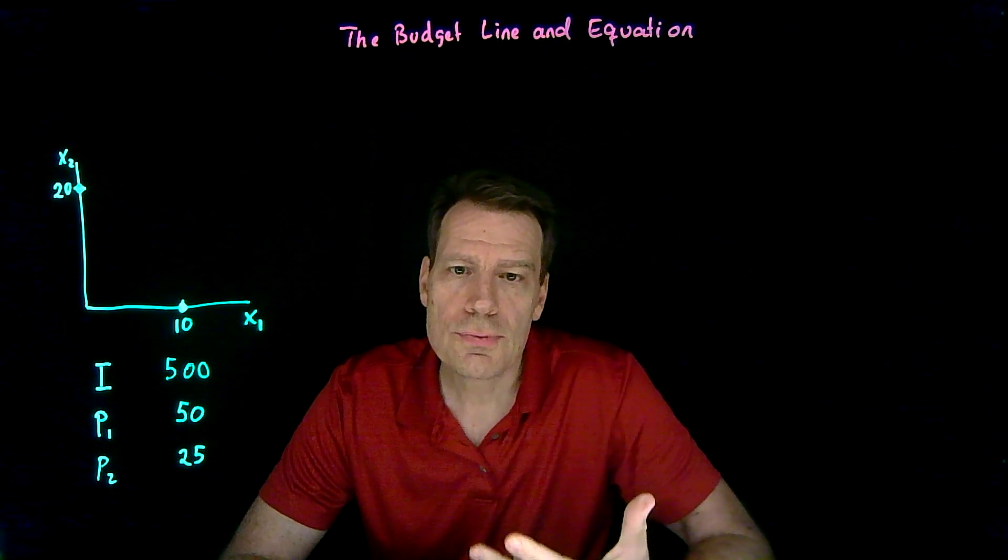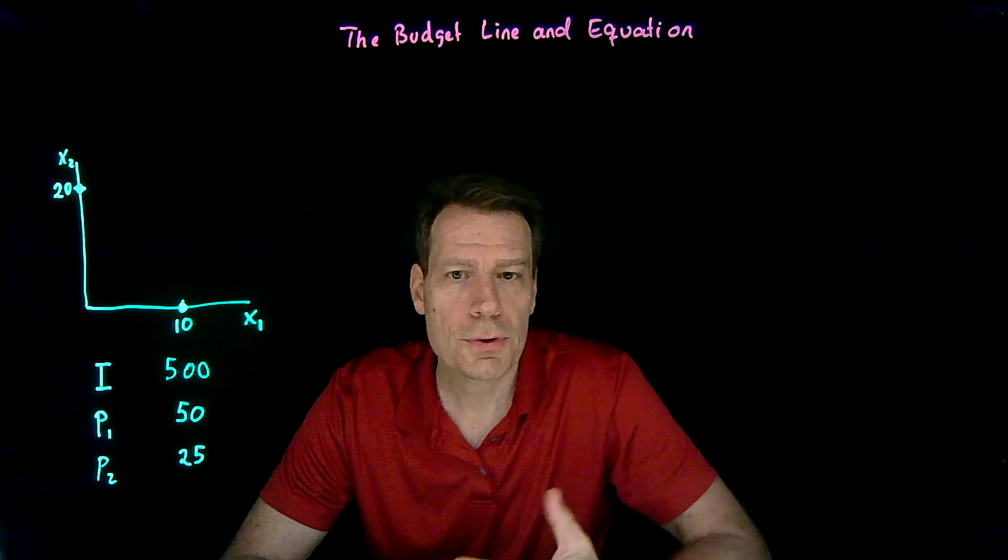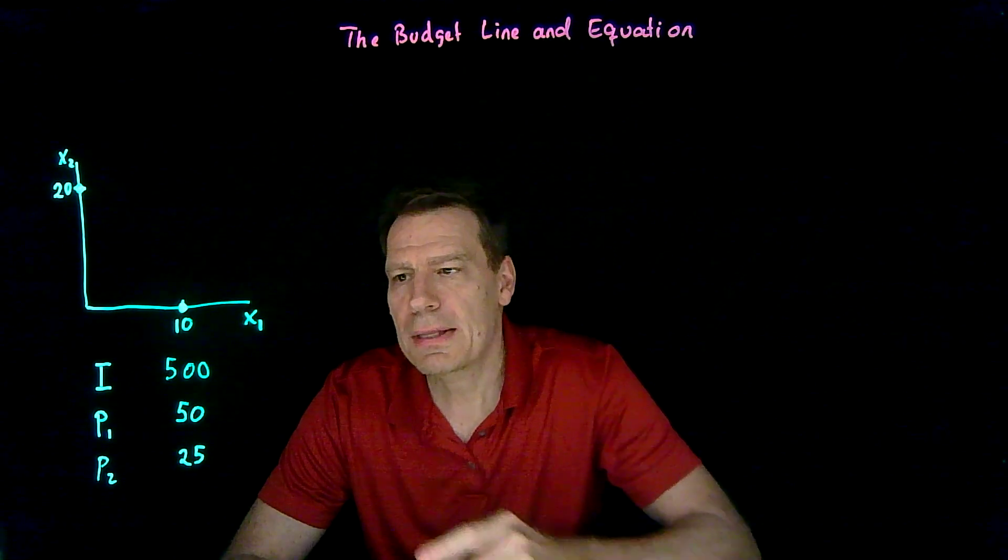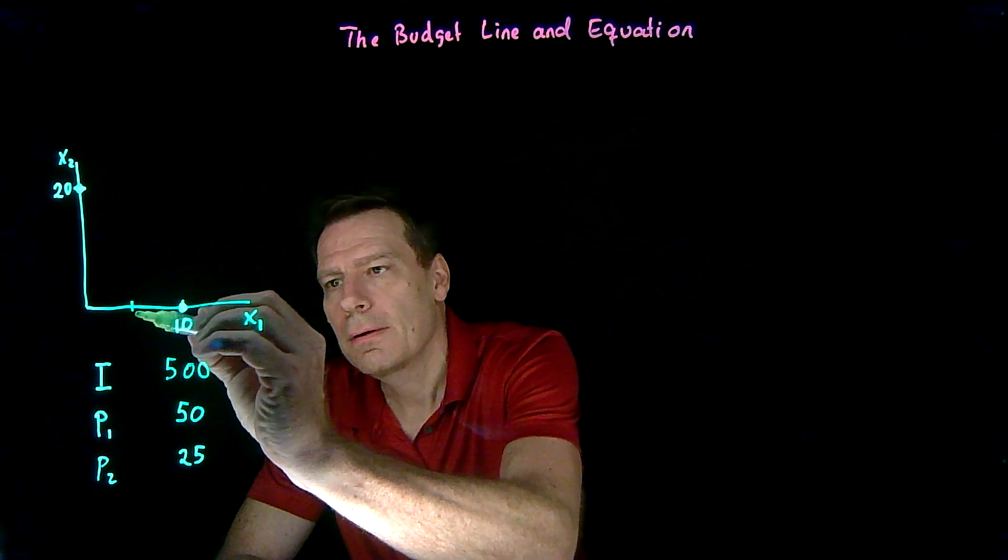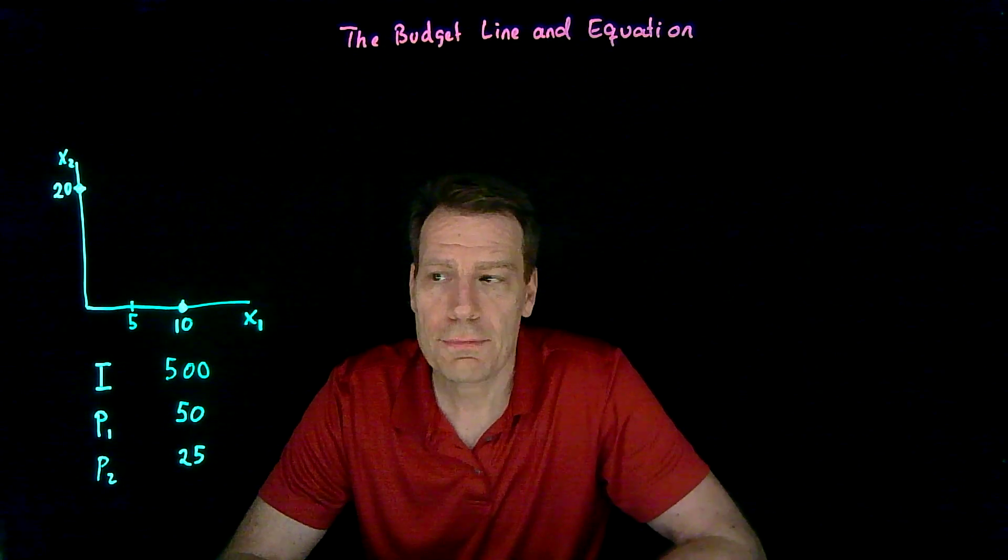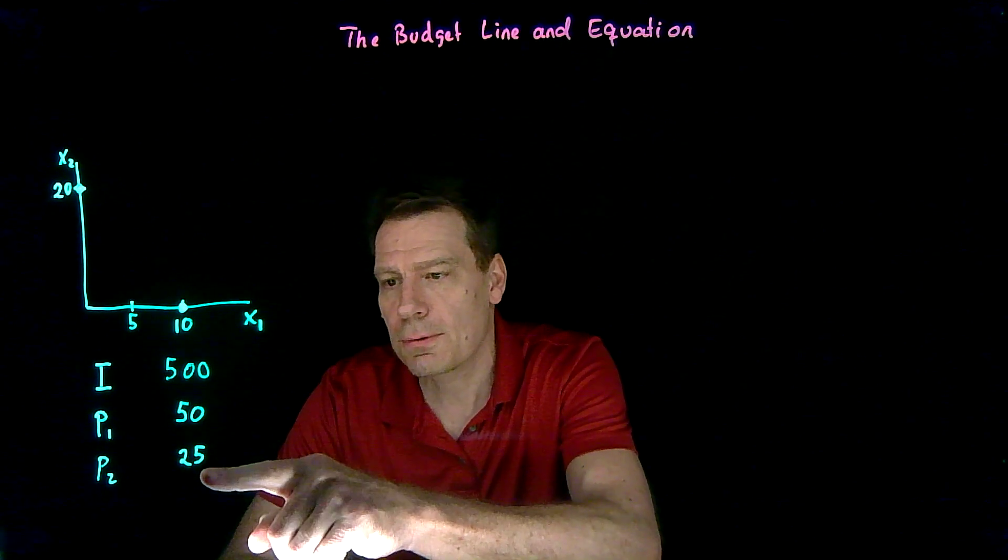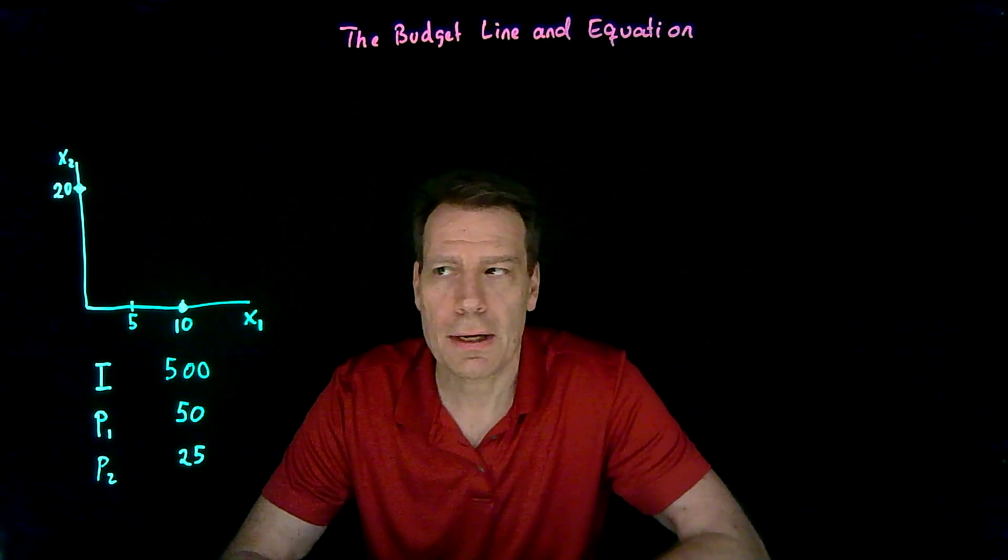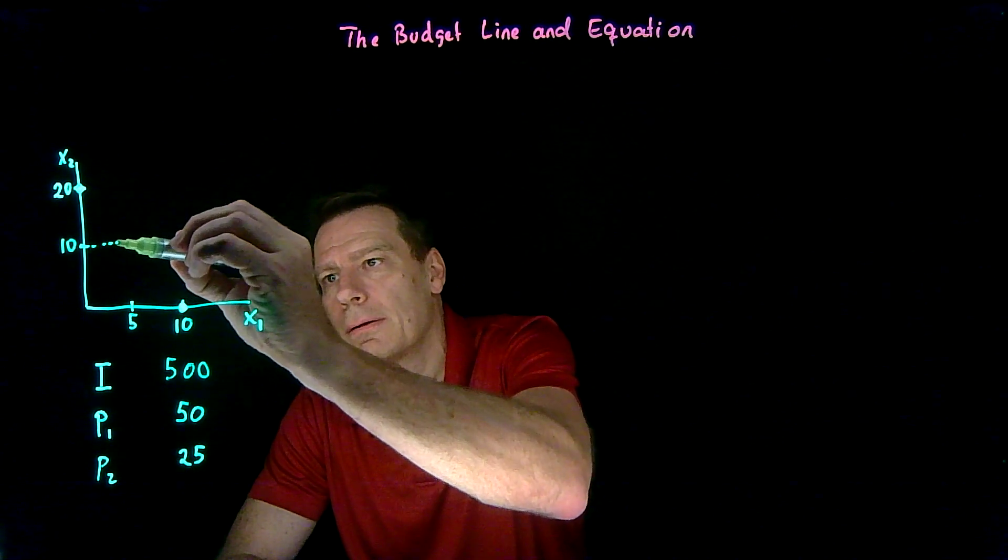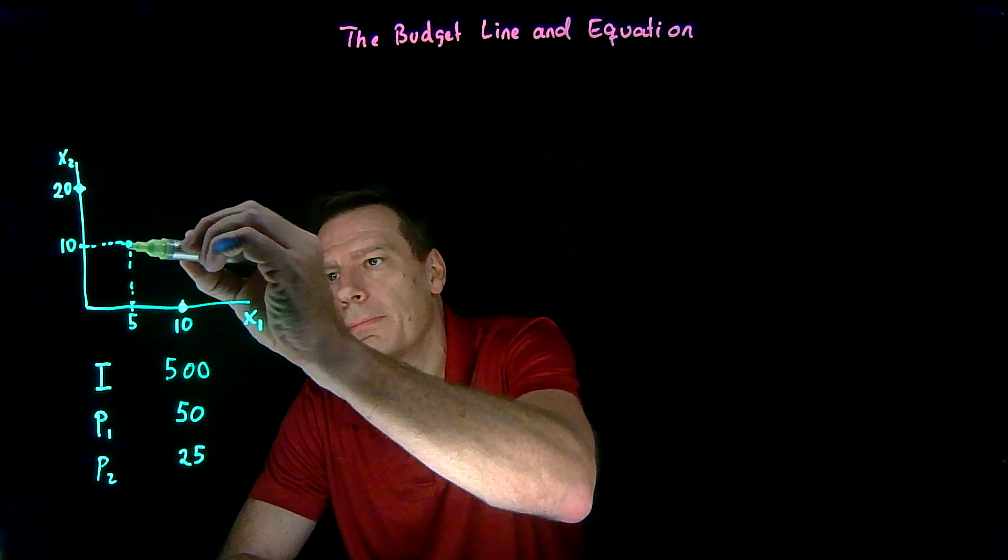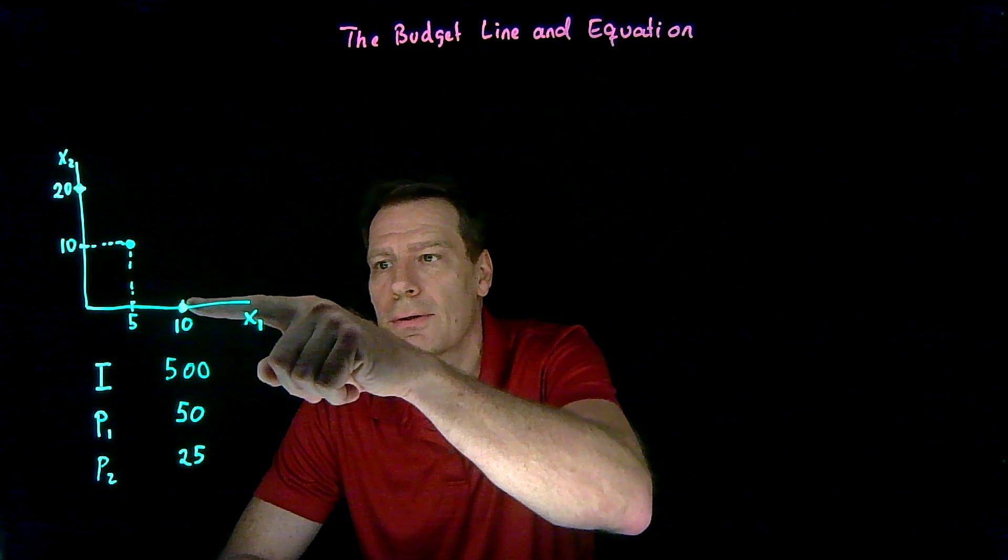So those are two extreme bundles you could buy, where you buy only one of the two goods. But of course, you could do many in-between things. You could spend half of your money on x1. In that case, you could afford 5 units. And you'd have $250 left over to spend on x2. x2 costs $25, so with $250, you could buy 10. And we'd get another bundle, but less extreme. And of course, you'll notice that that bundle lies on a straight line that connects these two.